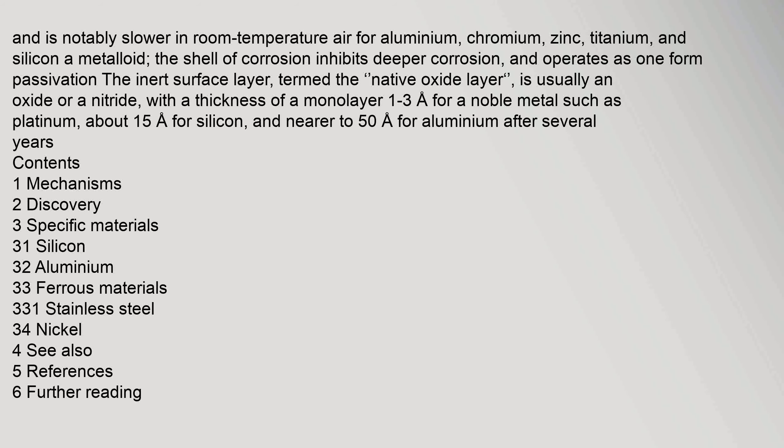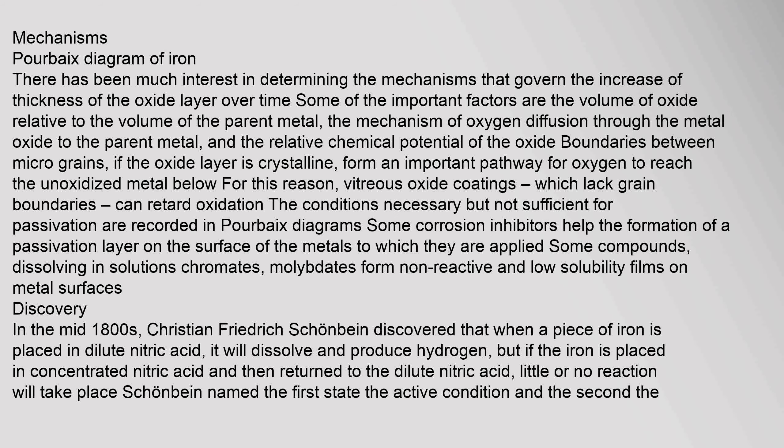Corrosion coating reduces the rate of corrosion by varying degrees, depending on the kind of base metal and its environment, and is notably slower in room temperature air for aluminium, chromium, zinc, titanium, and silicon — a metalloid. The shell of corrosion inhibits deeper corrosion, and operates as one form of passivation. The inert surface layer, termed the native oxide layer, is usually an oxide or a nitride, with a thickness of a monolayer of 1 to 3 nm.